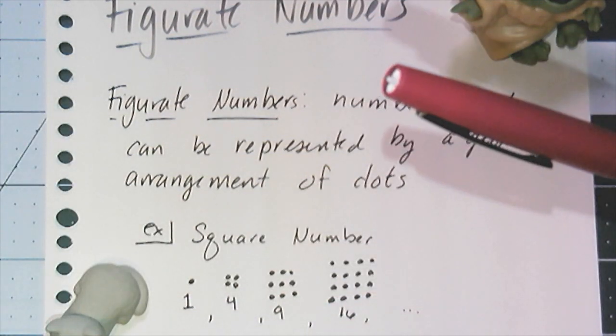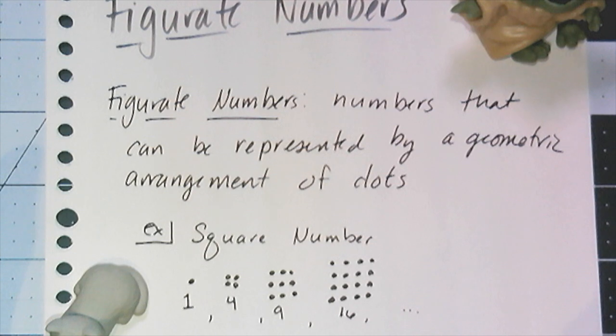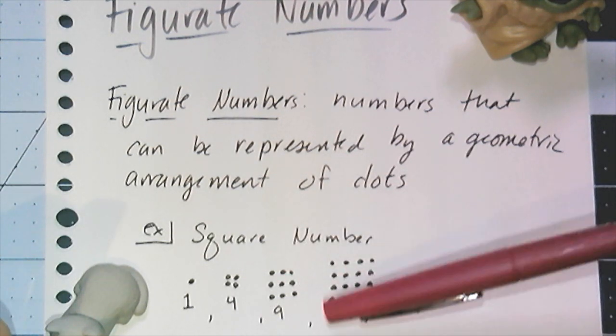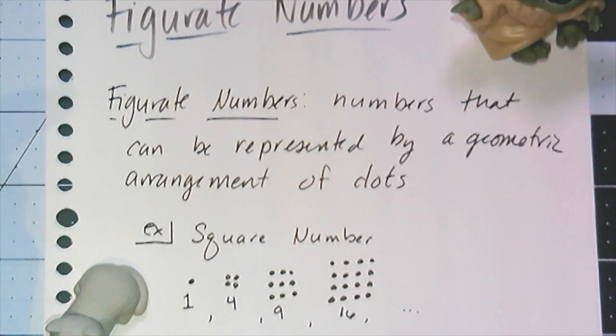You already know examples of figurate numbers, most specifically the square numbers, because I can take each square number and represent it as a square array of dots. So 1 by 1 is 1, 2 by 2 is 4, 3 by 3 is 9, and 4 by 4 is 16.